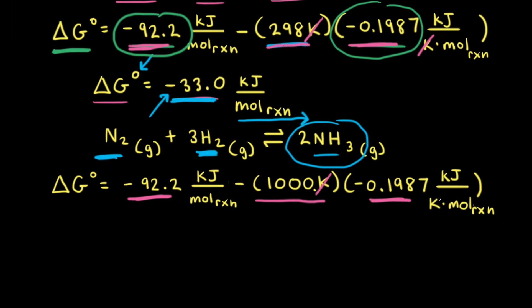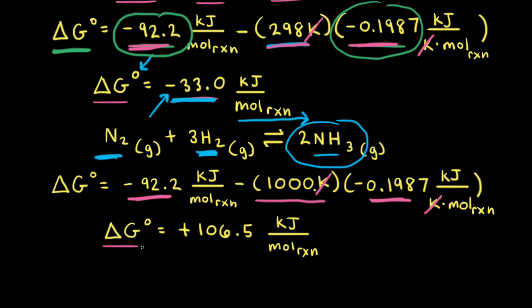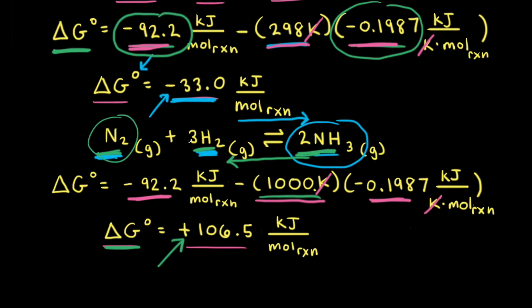With everything plugged in for the calculation at 1000 Kelvin — using the same values for ΔH⁰ and ΔS⁰ as before — Kelvin cancels out and gives us kilojoules per mole of reaction. After doing the math, ΔG⁰ is equal to positive 106.5 kilojoules per mole of reaction. Since ΔG⁰ is positive, the forward reaction is thermodynamically unfavorable, meaning the reverse reaction is favorable — ammonia gas would decompose into nitrogen gas and hydrogen gas.